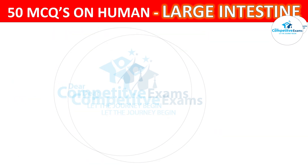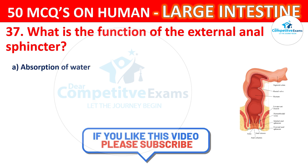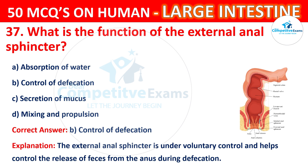Question number 37. What is the function of the external anal sphincter? The options are Absorption of water, Control of defecation, Secretion of mucus, or Mixing and propulsion. The correct answer is B, that is Control of defecation. The external anal sphincter is under voluntary control and helps control the release of feces from the anus during defecation.